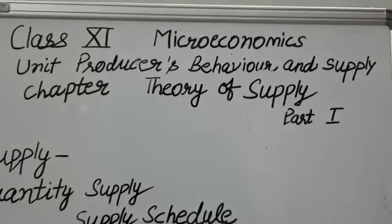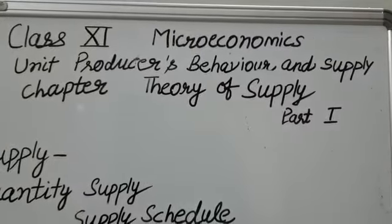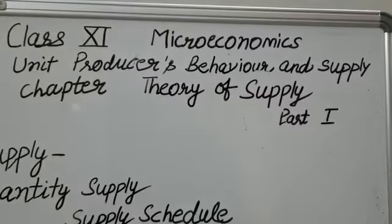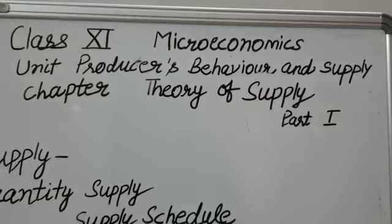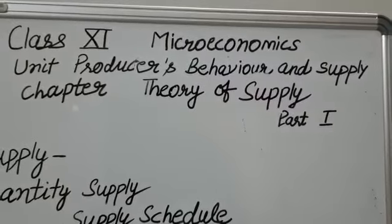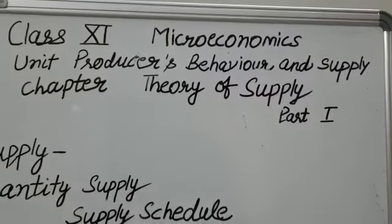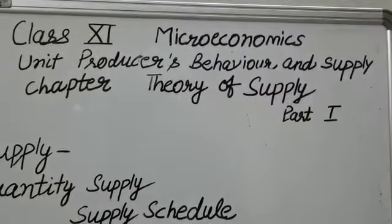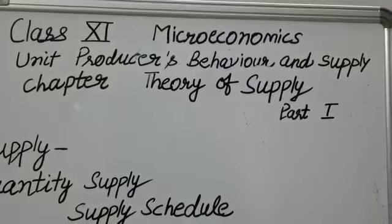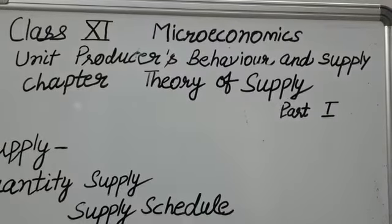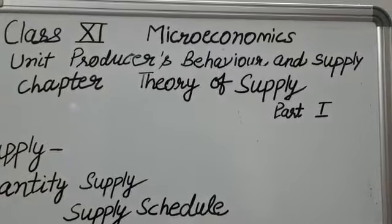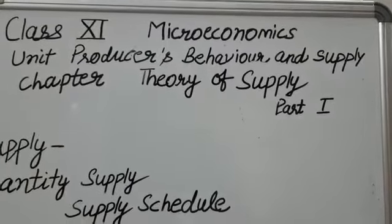Hello students, today we are going to study Microeconomics, Unit: Producers Behavior and Supply, Chapter: Theory of Supply, Part 1.